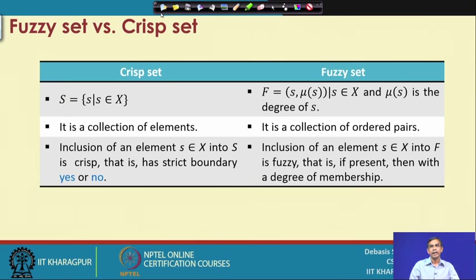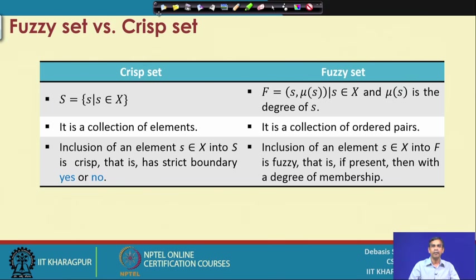Inclusion of an element S into a fuzzy set is present with a degree of membership. In other words, the same element S can belong to fuzzy sets F and G but with different membership values. For example, if F denotes the good students and G denotes the bad students, then the same element S can belong to good students as well as bad students, but with different membership values. For instance, S appears in F with membership value 0.7, whereas the same element belongs to set G with membership value 0.3. Same elements may appear in two sets with different membership values, whereas the same element may not appear in two crisp sets — it is either in one set or another.